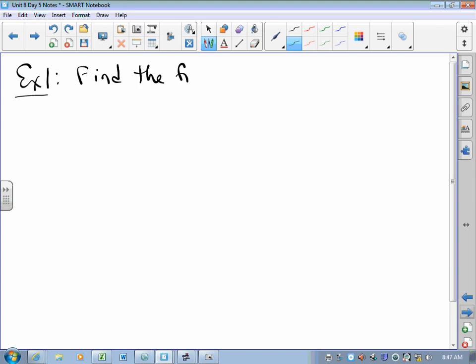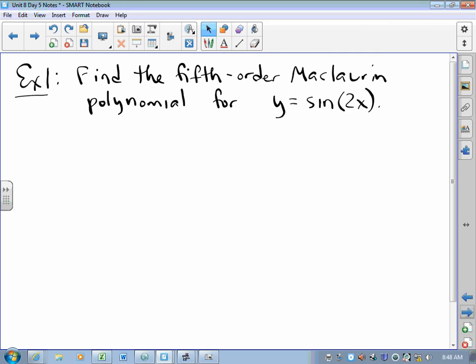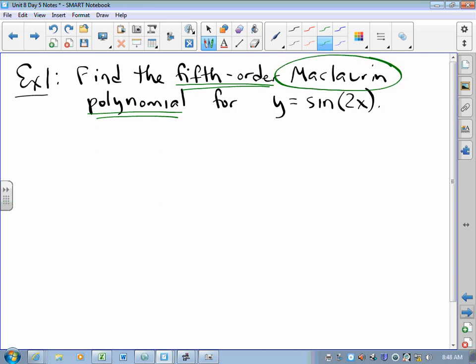Find the fifth-order Maclaurin polynomial for y = sin(2x). I'm looking for a polynomial, so I'm looking for something that's going to stop. In fact, I know exactly where it's going to stop. And I know that because it's a Maclaurin polynomial, it is centered at x = 0.